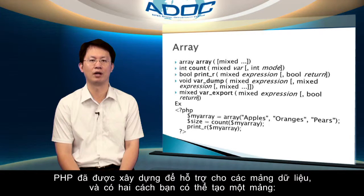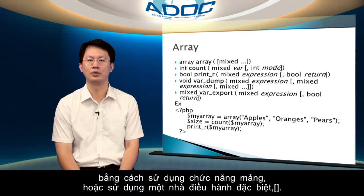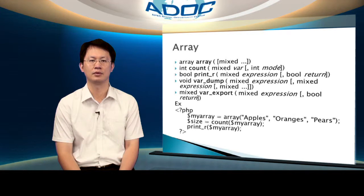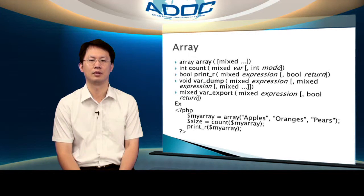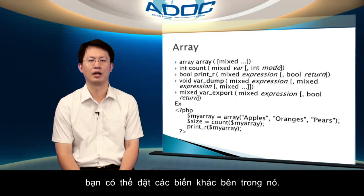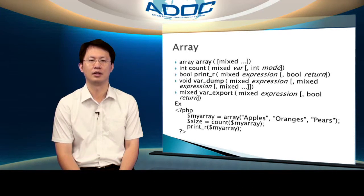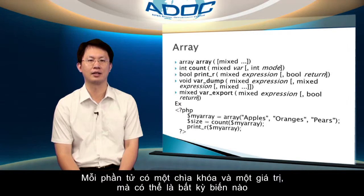PHP has built-in support for arrays of data. And there are two ways you can create an array: using the array function, or using the special square bracket syntax. Before we look at how arrays work, there are two key things you need to understand. An array is a normal PHP variable, like any other, but it works like a container. And you can put other variables inside it. Each variable inside an array is called an element, and each element has a key and a value, which can be any other variables.